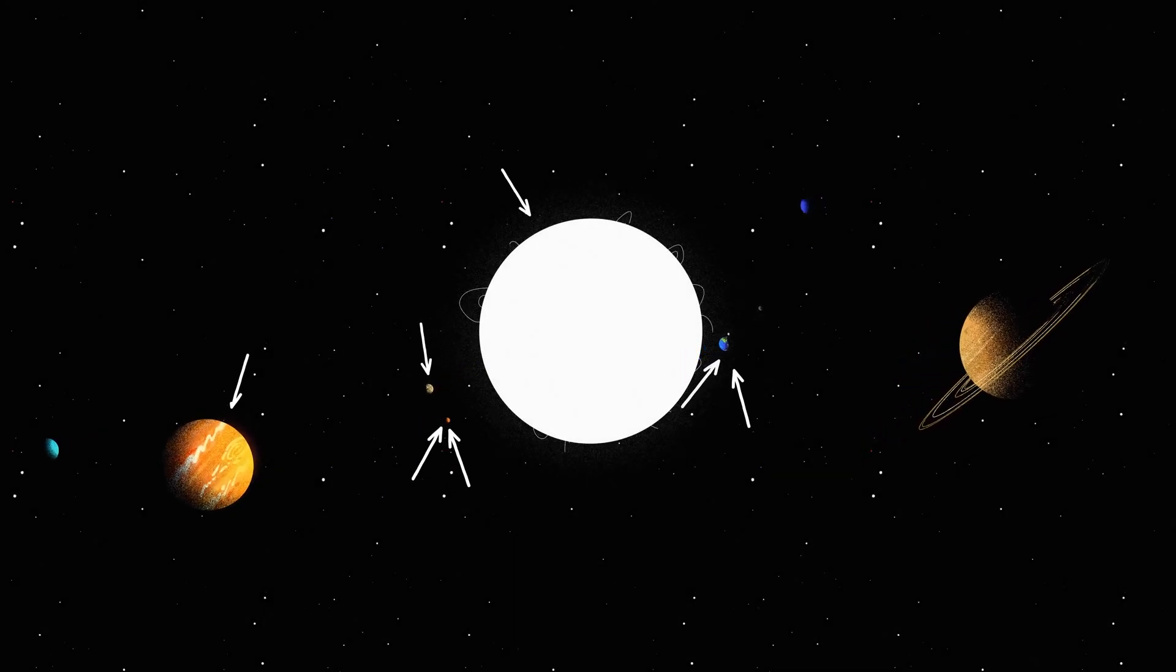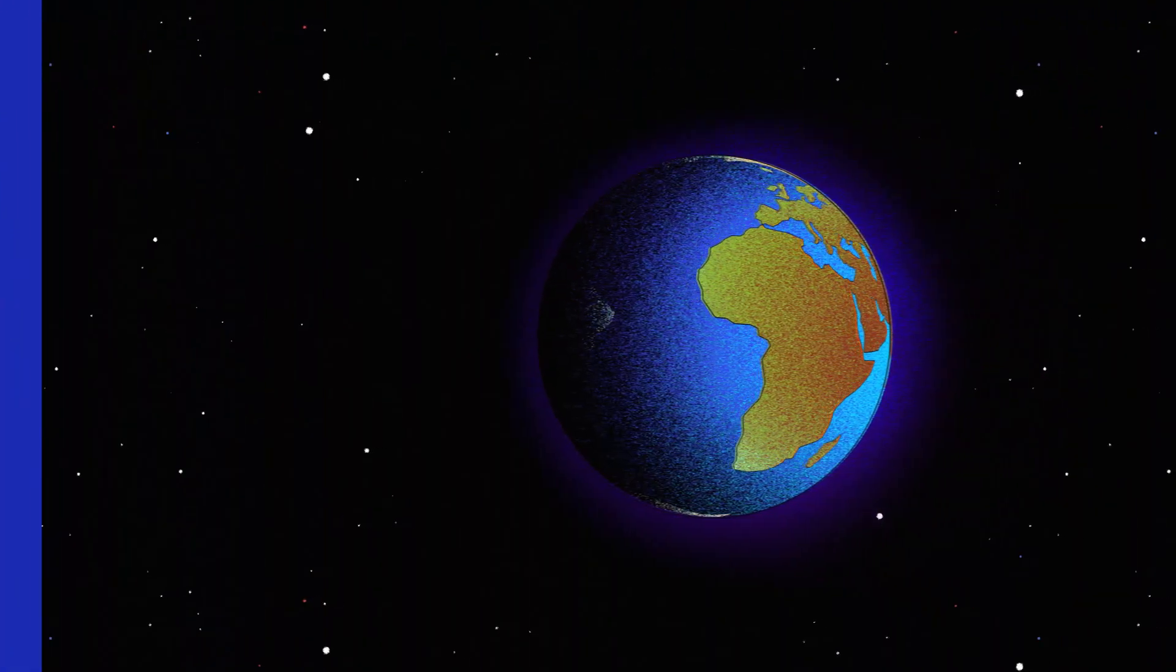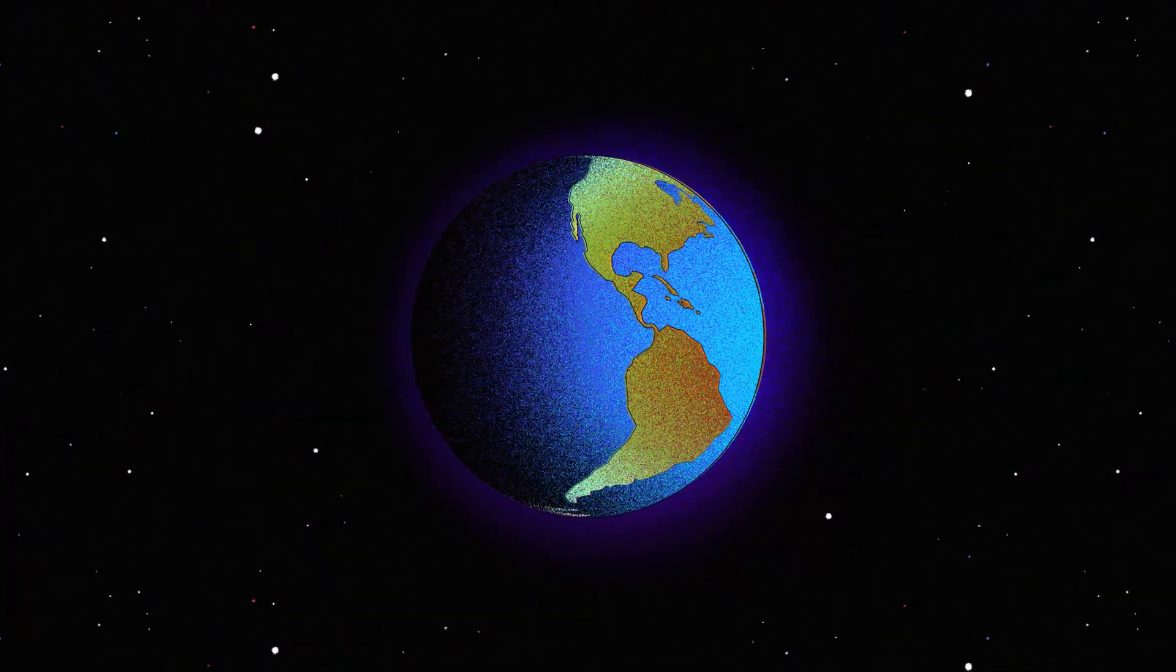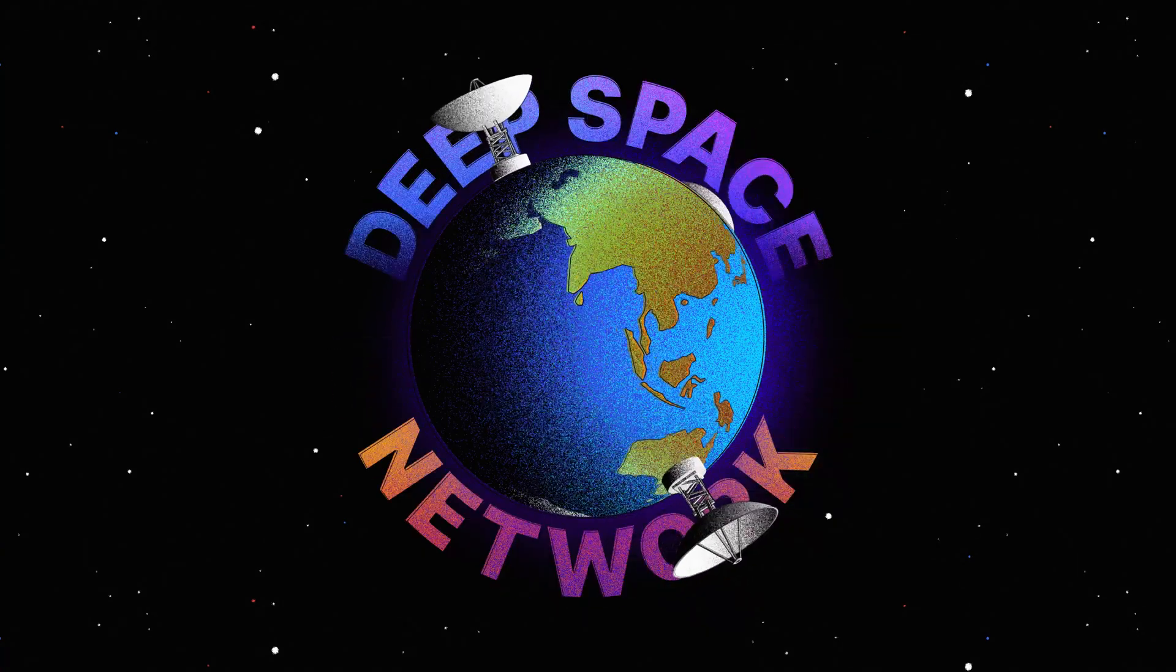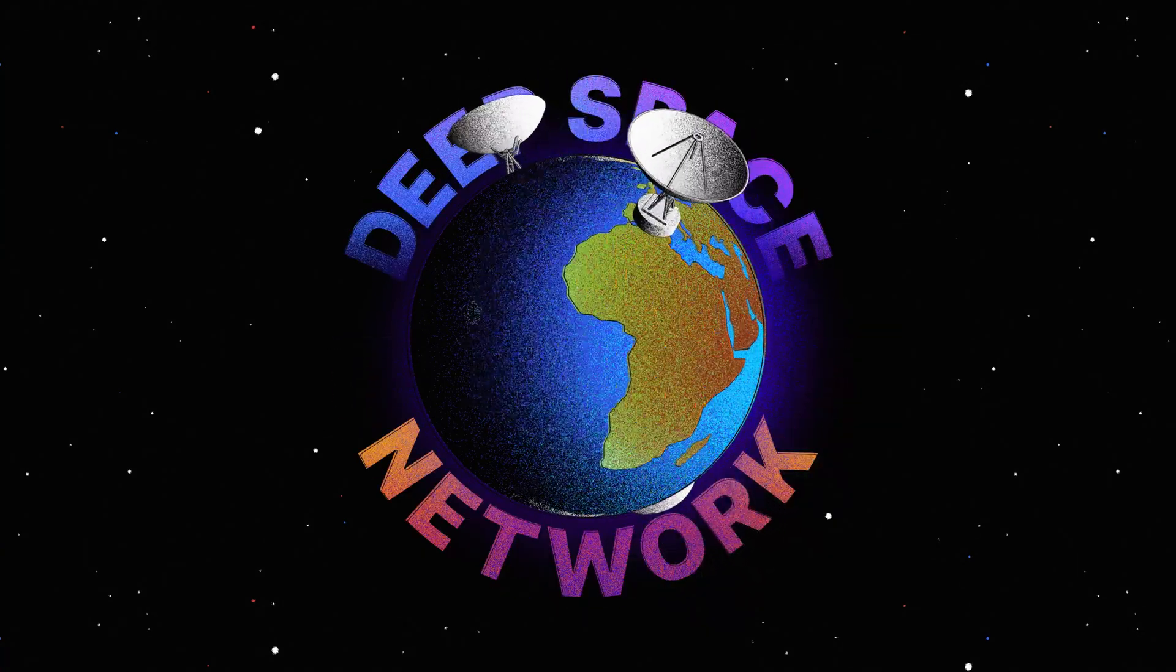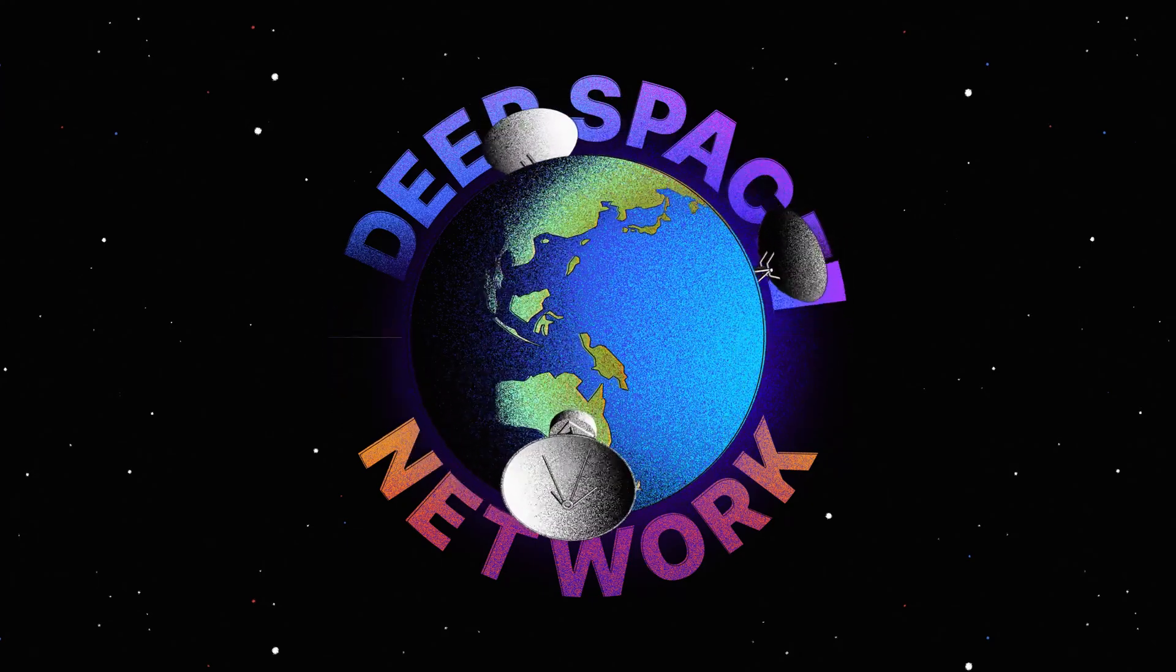NASA has dozens of robotic spacecraft exploring our solar system and beyond. Scientists and engineers communicate with and navigate faraway spacecraft using the Deep Space Network, NASA's international collection of giant radio antennas used to communicate with spacecraft at the moon and beyond.